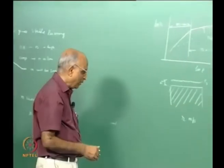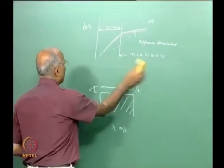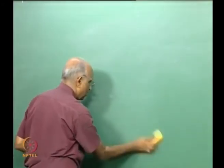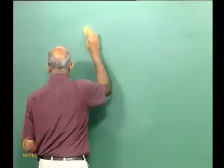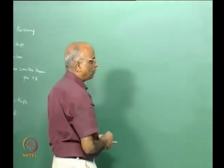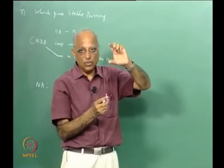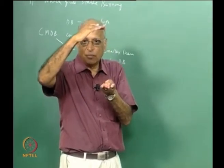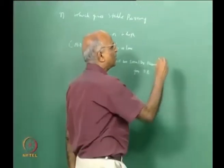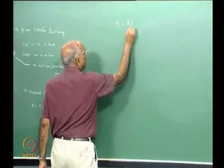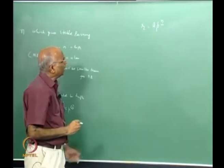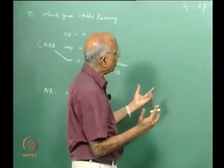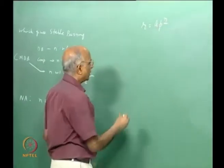To summarize: for double base we analyzed fizz zone, dark zone, and second luminous zone. For composites we used Hermann's simple model with a flame standing off at distance x* from the surface. We should now ask: what value of n gives good burning in a rocket — should n be large or small? For that, let us go to the solid propellant rocket system.